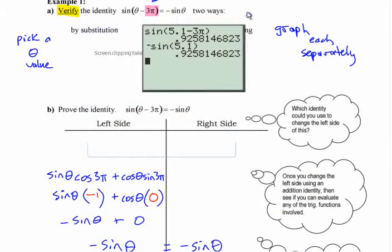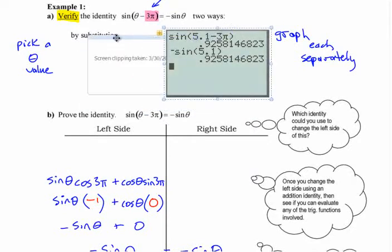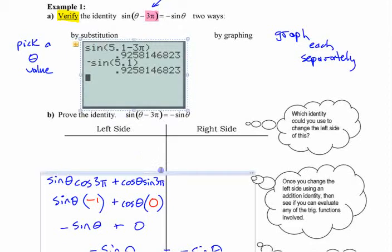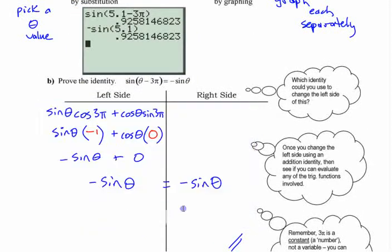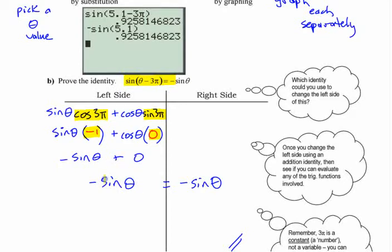If you want to prove that it works, you need to use algebra — work down one side just like any other proof until you make it look like the other side. You can substitute certain values in: cosine of 3π is negative 1, and sine of 3π is 0. Those two values let you evaluate each of those terms. This one ends up being 0 times cosine θ, which is 0, so it simplifies to negative sine θ — which is what you want. That's proving it algebraically, because no matter what angle you put in, that's going to work.